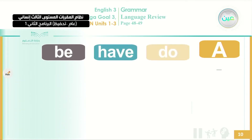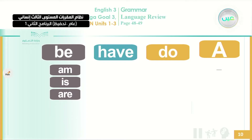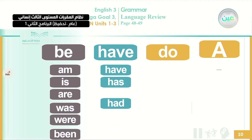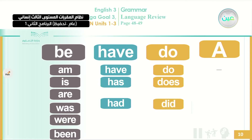Now, what are the forms of be, have, and do? Be can appear as am, is, or are in the present, and was, were, or been in the past. Have can appear as have, has — when used with the singular — or had in the past. The verb do can be used as do or does — for the present simple with the third person — and did in the past. These are the forms these three verbs can take.